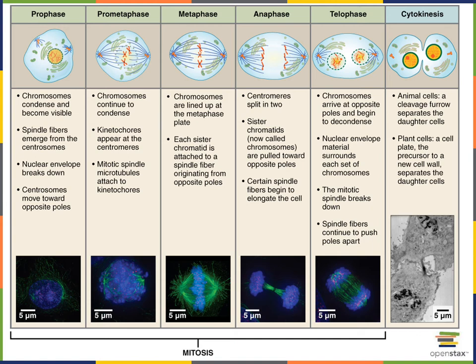Metaphase occurs as the mitotic spindle pulls the chromosomes until they line up right at the midline of the cell, forming what's known as the metaphase plate.